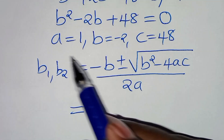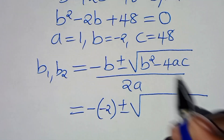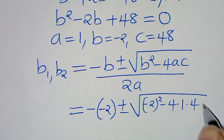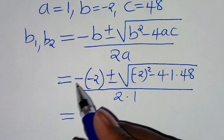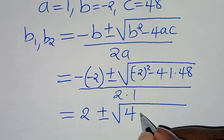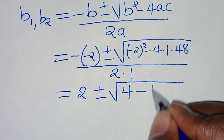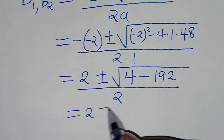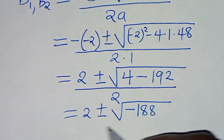Substituting in: we have minus (minus 2), plus or minus the square root of (minus 2) squared minus 4 times 1 times 48, all divided by 2 times 1. This gives us 2 plus or minus the square root of 4 minus 192, which is the square root of minus 188, divided by 2.